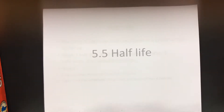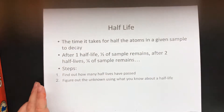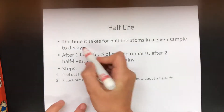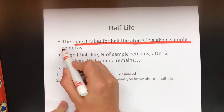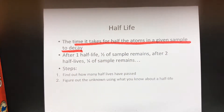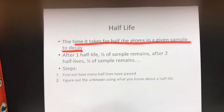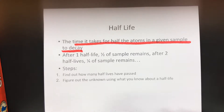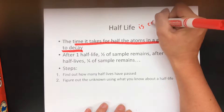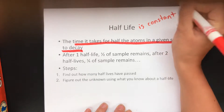So let's first talk about what a half-life is. A half-life is the time it takes for half the atoms in a given sample to decay. So if you start off with 50, how long it takes to go to 25, how long it takes to go from 25 to 12.5, and so forth. However long it took to go from 50 to 25 is going to be the exact same amount of time it goes from 25 to 12.5. The half-life is constant — it does not change.